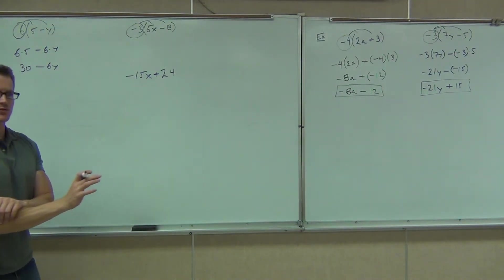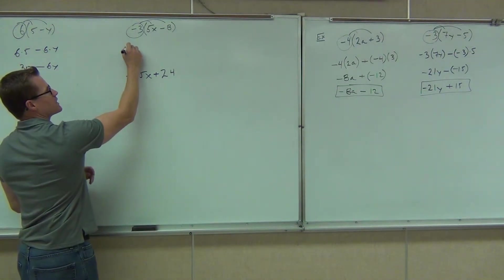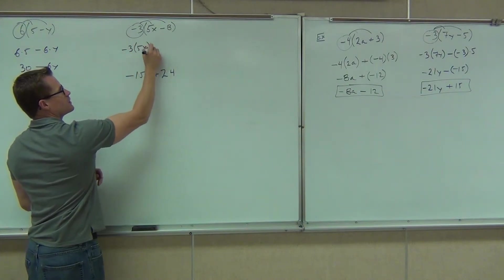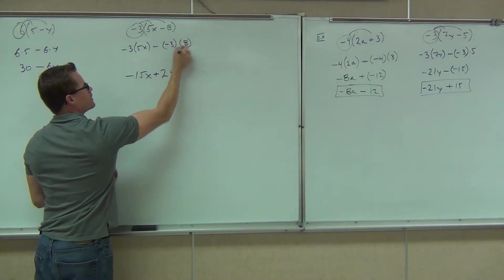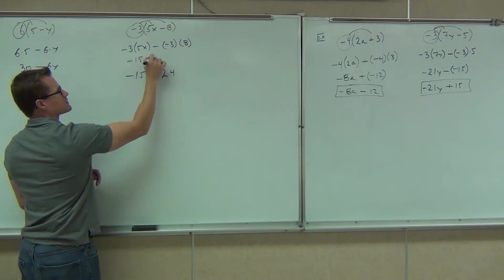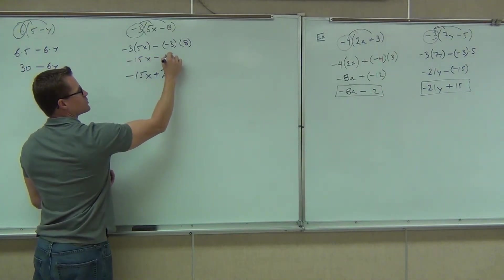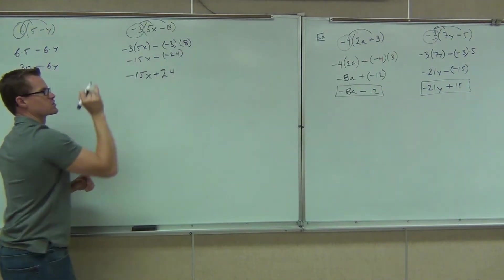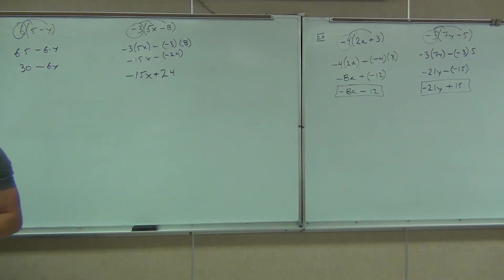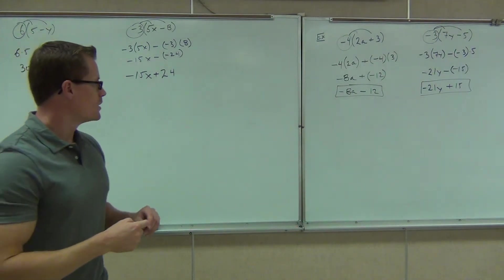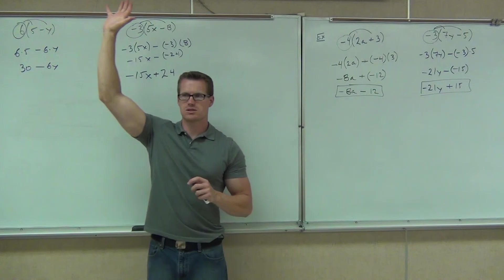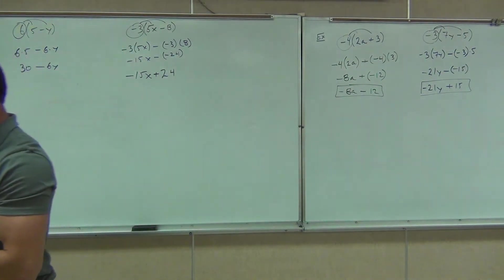I'll show you the other steps if you really want to see them. Here you can show negative three times five x minus negative three times eight. That's going to give you negative 15 x minus negative 24. And that changes to the plus 24. So either way you want to do that is kind of the point. Would you raise your hand if you feel okay with doing these two? Good. We're going to try a couple more. I'll give you some more to do on your own.